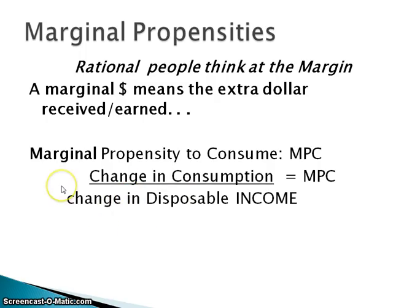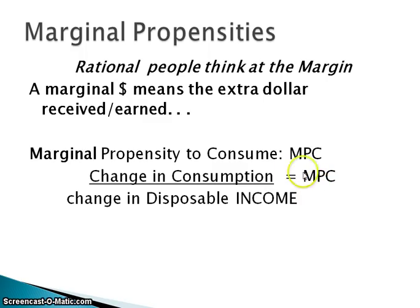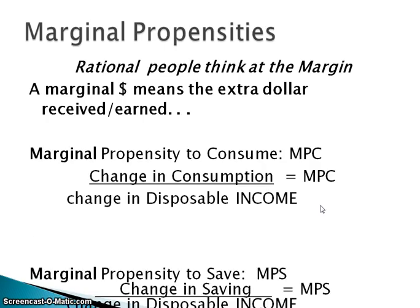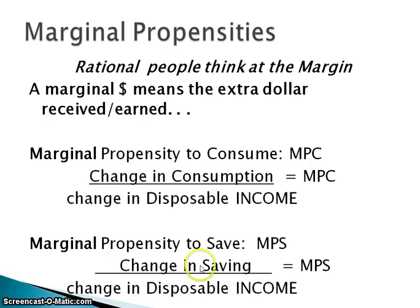This is a really important formula, because on a test or the AP exam you might be given a chart with consumption and disposable income and be asked to figure out the multiplier. To do that you need to know the MPC and MPS. Just like MPC is the change in consumption over the change in disposable income, the marginal propensity to save is the change in savings divided by the change in disposable income.